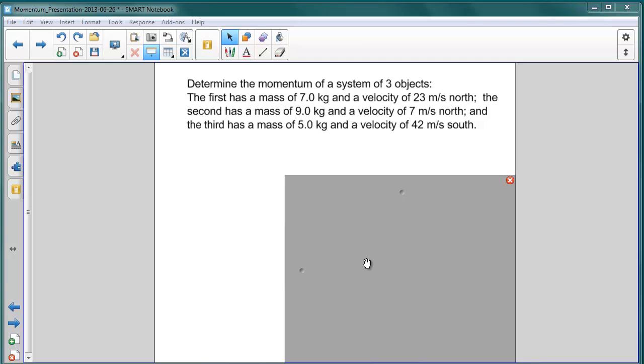In this last problem in our section on the momentum of a system of objects, you're asked to determine the momentum of a system of three objects. The first has a mass of 7 kg and a velocity of 23 m/s to the north.